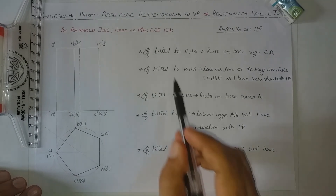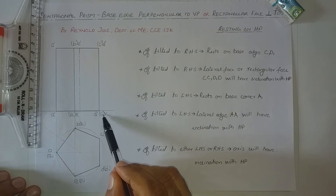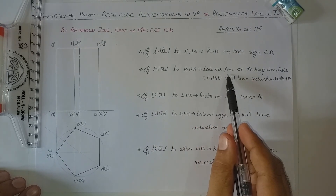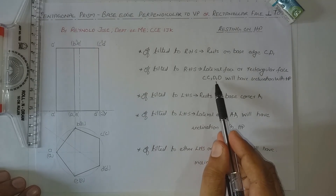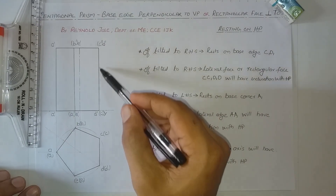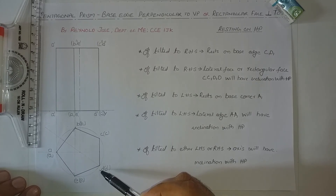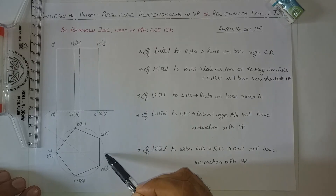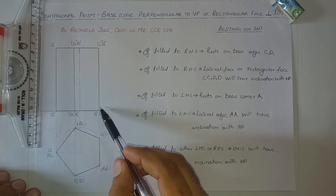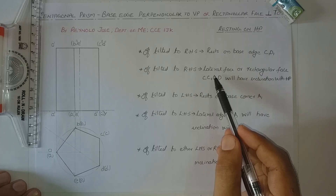So if this prism is tilted to the right-hand side, it will be resting on base edge C1D1. In the front view, C1D1 is the bottom edge it rests on. If tilted to the right, the lateral face — the rectangular face CC1D1D — will have an inclination with respect to HP. This rectangular face is shown as a line in the front view and also as a line in the top view, because this rectangular face is perpendicular to VP.